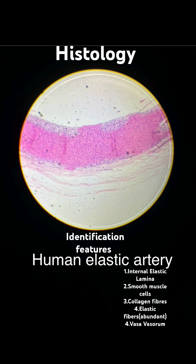Media: the middle layer, featuring a thick layer of smooth muscle cells that are circularly arranged. It also contains abundant elastic fibers, collagen fibers, and the external elastic lamina, which is a thick elastic layer.